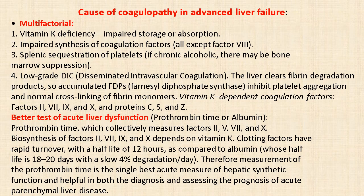Coagulopathy in liver failure is multifactorial: vitamin K deficiency, impaired storage or absorption, impaired synthesis of coagulation factors — all except factor 8 — splenic sequestration of platelets, and in chronic alcoholics there may be bone marrow suppression. Low-grade disseminated intravascular coagulation occurs, and impaired liver clearance of fibrin degradation products causes these to accumulate, inhibiting platelet aggregation and normal cross-linking of fibrin monomers.